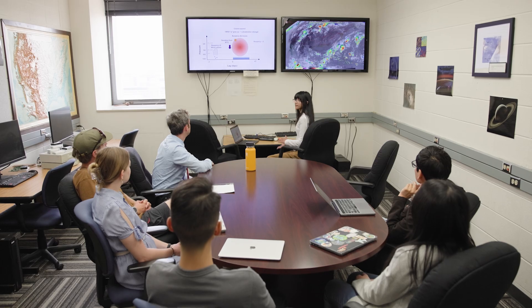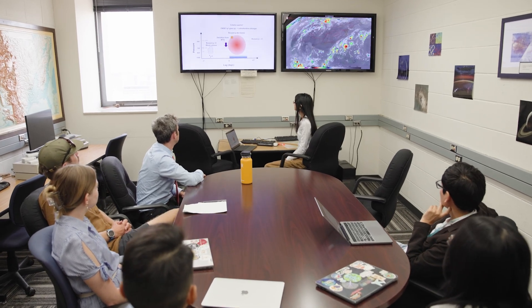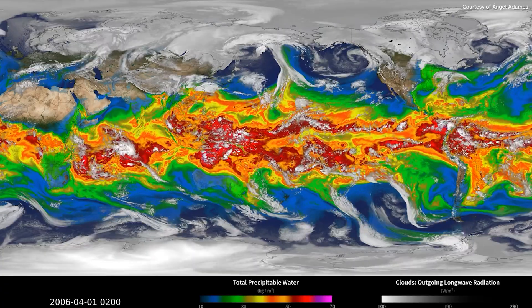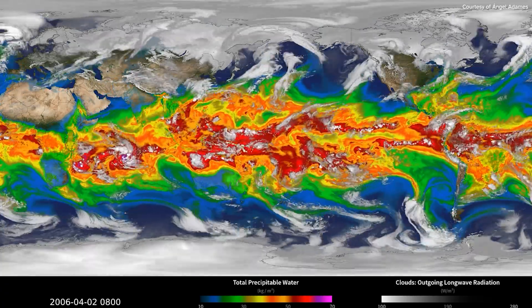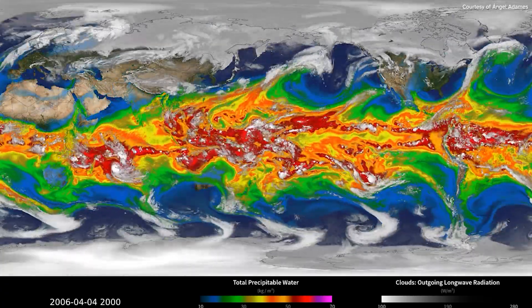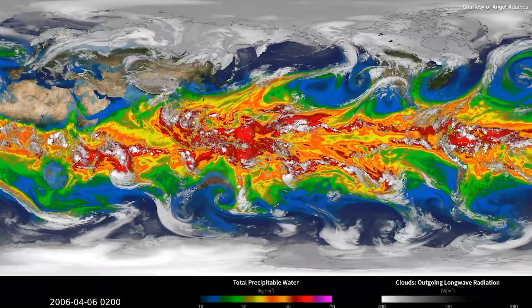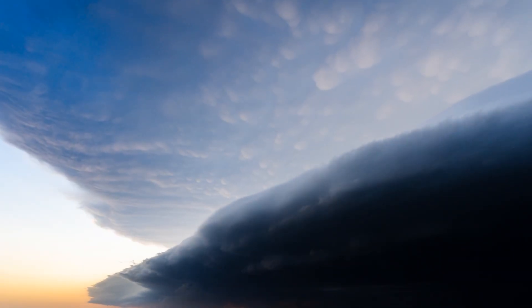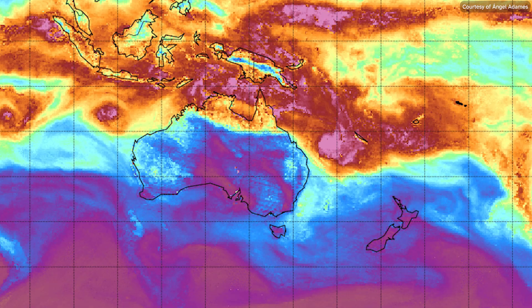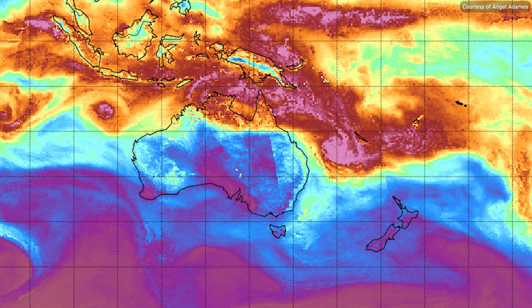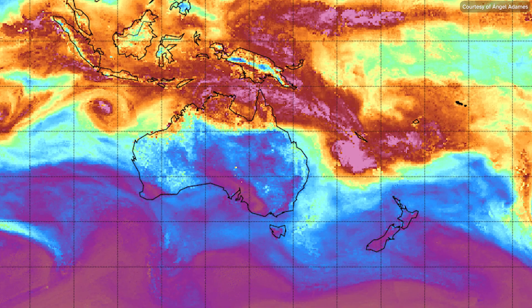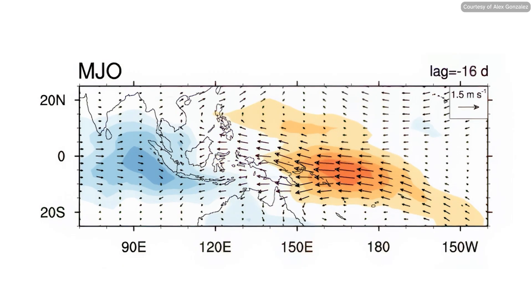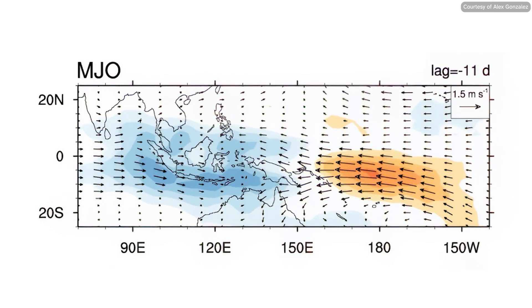So we decided to use the observations that we had of the Madden-Julian Oscillation and we developed a linear model. We found that humidity was the most important thing determining how clouds evolved in the system and then how clouds in turn interacted with the wind patterns. And when the humidity goes up, it starts raining a ton and then wind patterns develop.